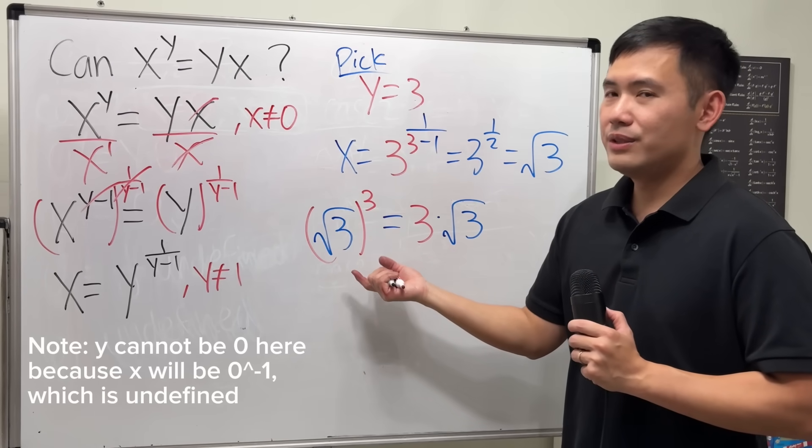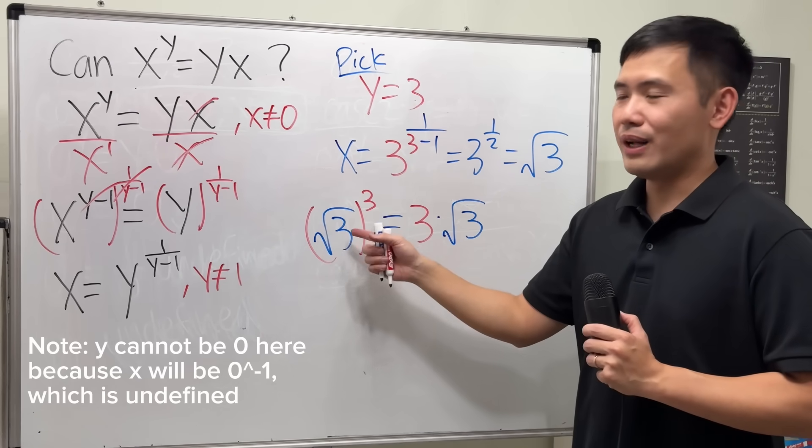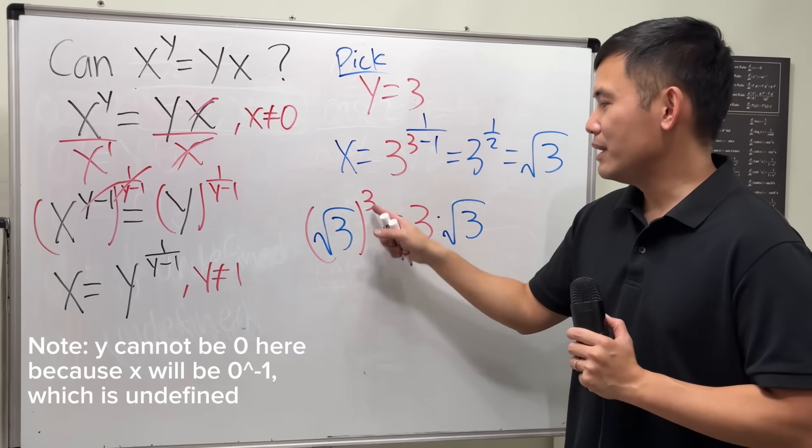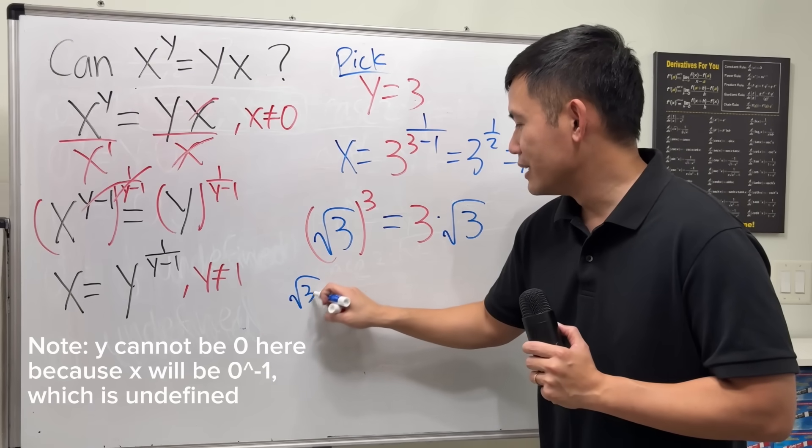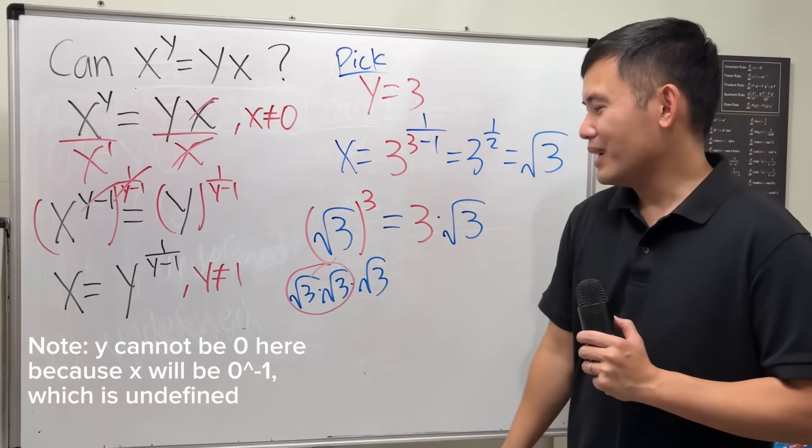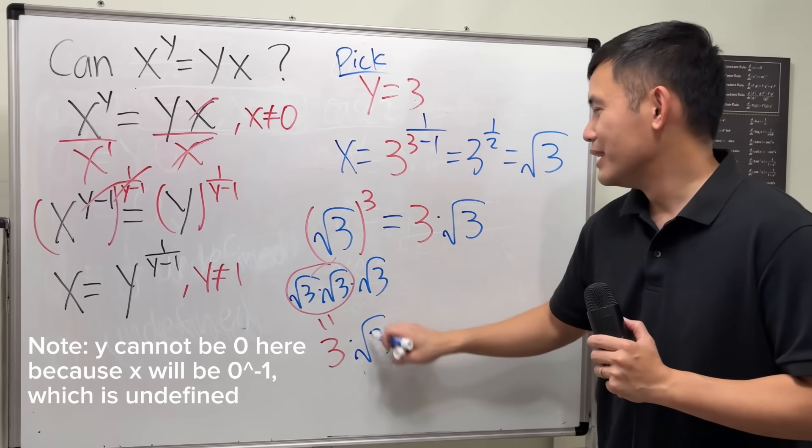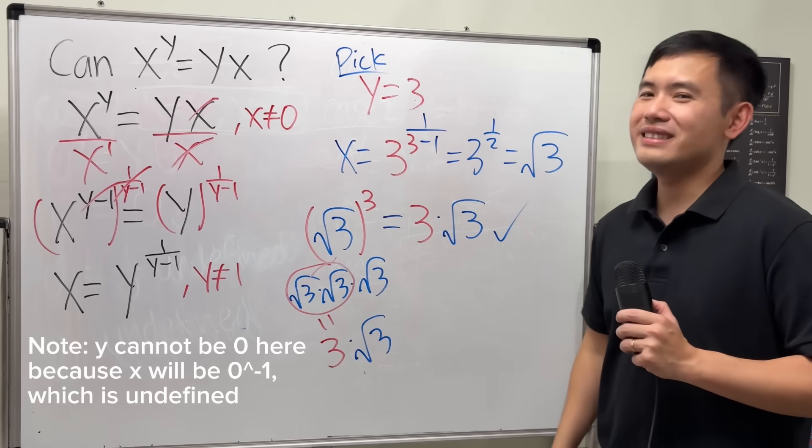What does this mean, though? It means we have square root of 3 times square root of 3 times square root of 3. This right here is what? That is just equal to 3. And then times that square root of 3. So of course, this right here is correct.